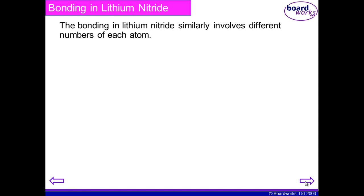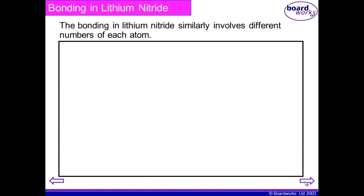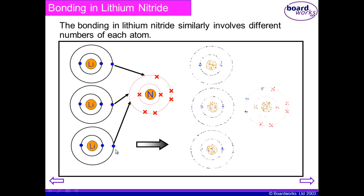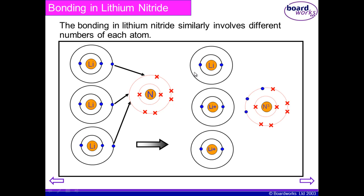This is another example of ionic bonding involving lithium nitride. Lithium is in group one, so it has a single electron in its outer shell. Nitrogen is in group five and is a non-metal, so it has five electrons in its outer shell. What happens is the nitrogen takes the three electrons from three lithium atoms. They become ions and you end up with lithiums with positive charges and the nitrogen with a 3− charge overall, and those will be attracted.